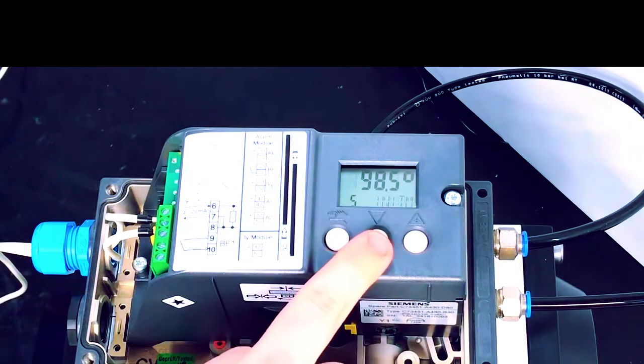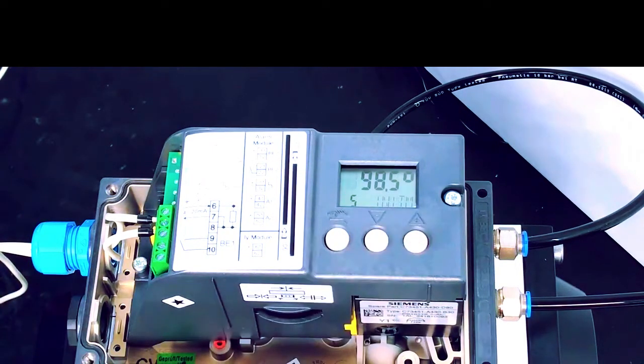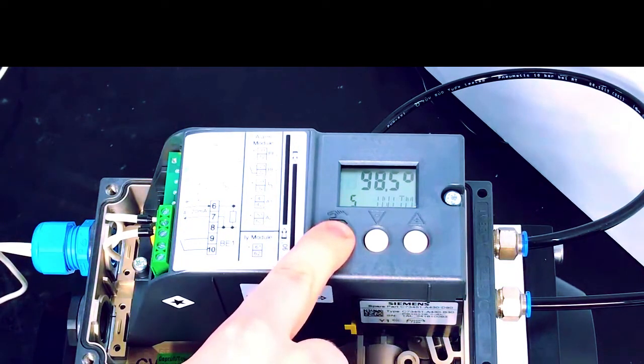If you'd like to change a parameter press the plus and minus buttons. In this case we don't need to change anything so we'll just exit out of the menu. Hold down the hand button for about five seconds and it will exit.